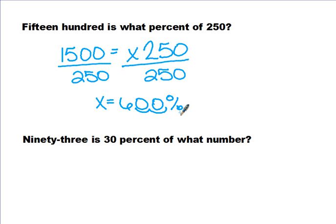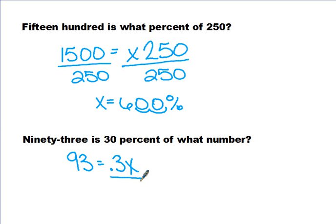Let's work the next example out together. Ninety-three is thirty percent of what number? Again, step by step: '93 is' means equals, 'thirty percent' — we change that to a decimal, so it's 0.3 or 0.30 — 'of what number.' In order to solve for x, we divide both sides by 0.3. Ninety-three divided by 0.3 equals 310.